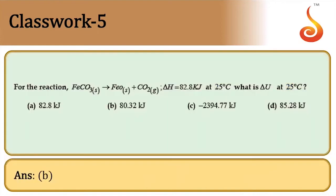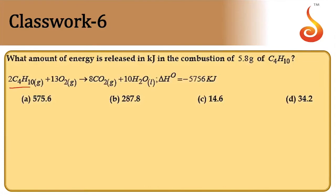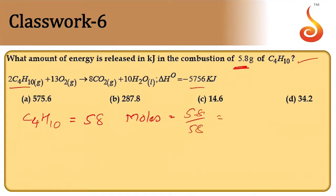Next: what amount of energy is released in the combustion of 5.8 grams of butane? From the reaction, 2 moles of butane gives 5756 kJ. The molar mass of C₄H₁₀ is 58, so number of moles = 5.8/58 = 0.1 moles of butane.